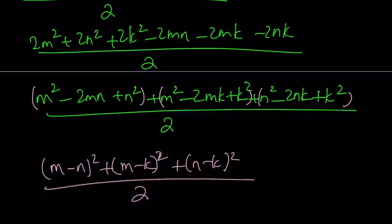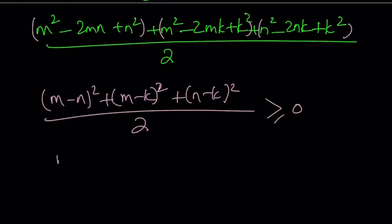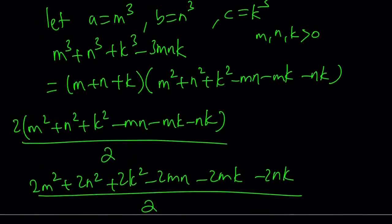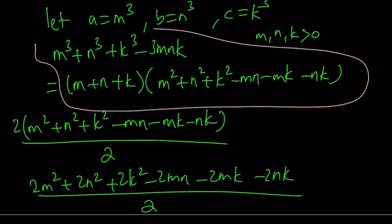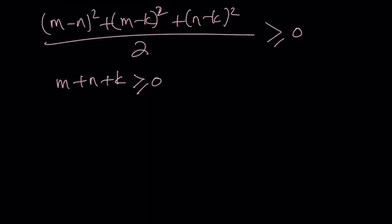Notice that no square is negative, so this expression is going to be greater than or equal to 0. We also know that mnk is positive or greater than or equal to 0. Therefore, m plus n plus k is also going to be greater than or equal to 0. Now take a look at this expression. We were able to factor this expression, the cubic. Both factors are greater than or equal to 0, which means the product, which is m cubed plus n cubed plus k cubed minus 3mnk, is also greater than or equal to 0.